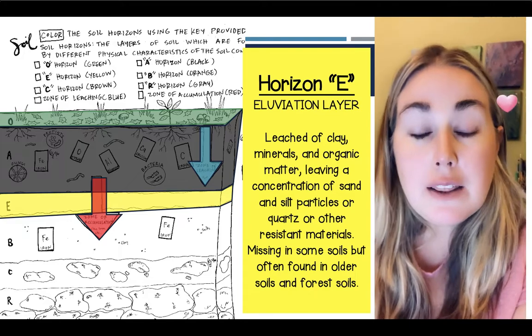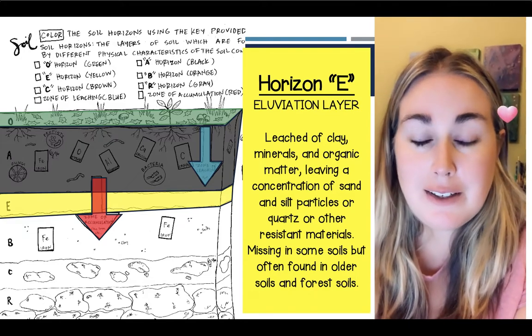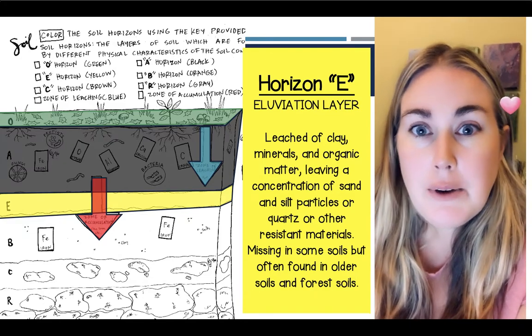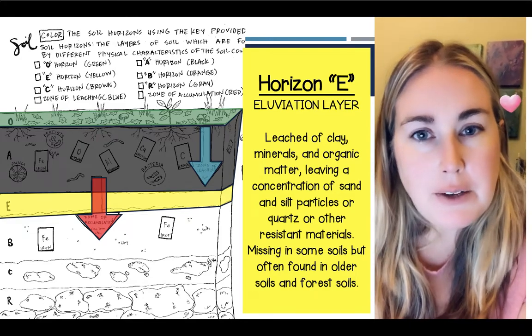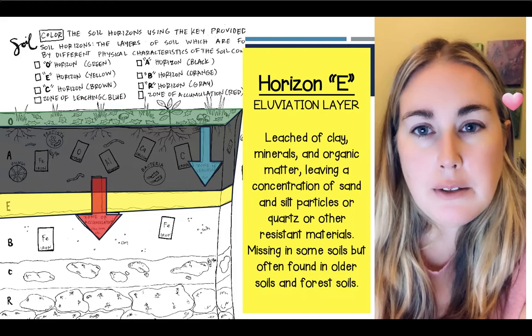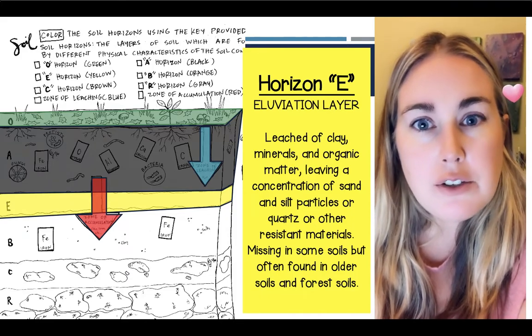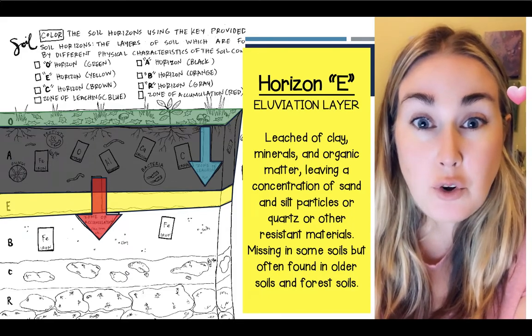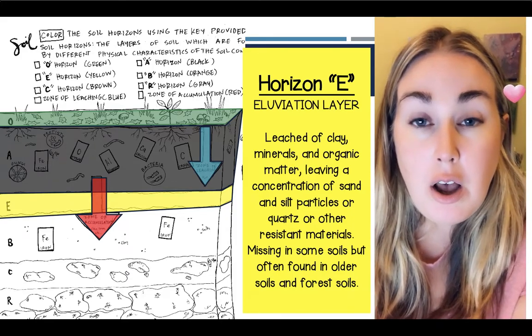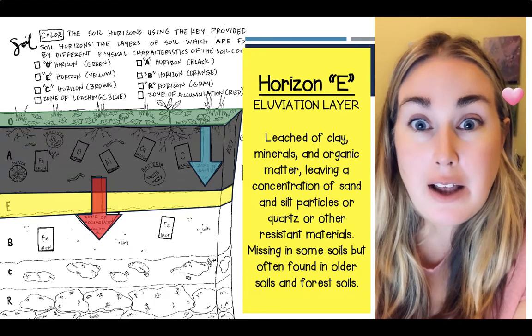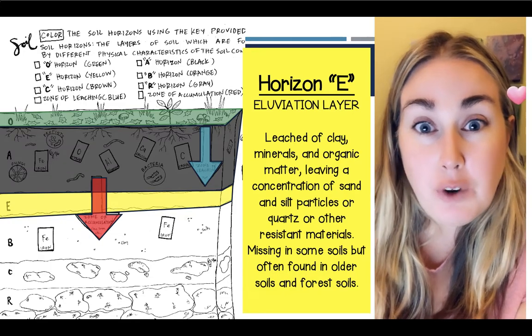The next horizon is Horizon E. Horizon E isn't found in all soils — it's usually found in soils that are much older or soils that are in the forest.